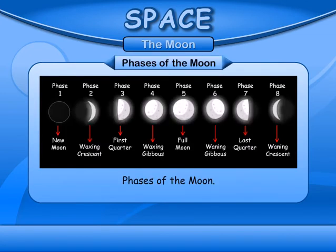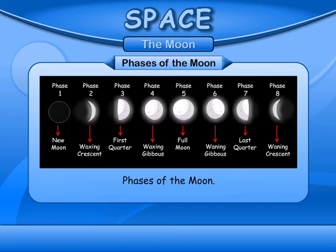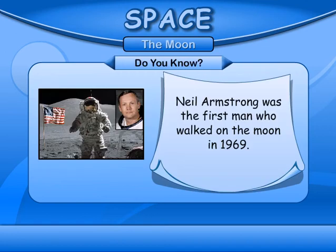The 8 phases of the Moon are: Phase 1 - New Moon, Phase 2 - Waxing Crescent, Phase 3 - First Quarter, Phase 4 - Waxing Gibbous, Phase 5 - Full Moon, Phase 6 - Waning Gibbous, Phase 7 - Last Quarter, and Phase 8 - Waning Crescent. Neil Armstrong was the first man who walked on the Moon in 1969.